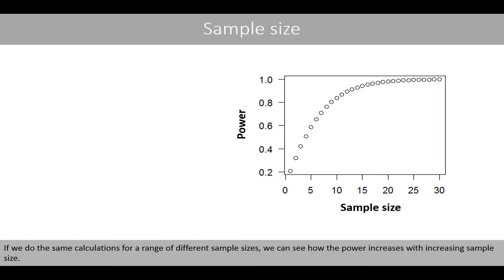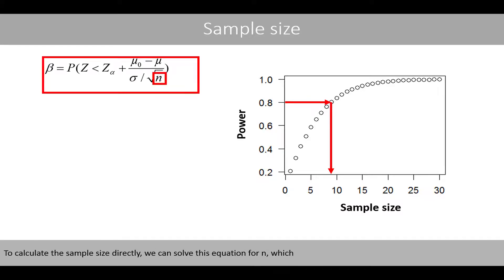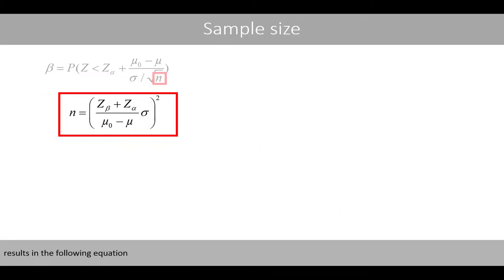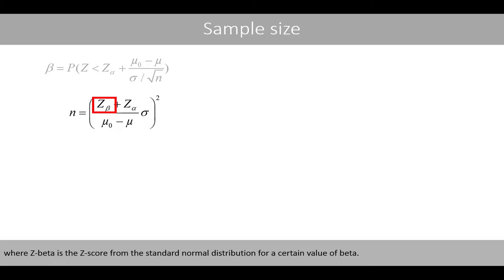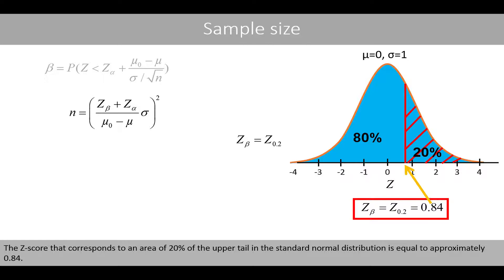If we do the same calculations for a range of different sample sizes, we see how the power increases with increasing sample size. If we like to have a power of, for example, 80%, we need a sample size of about 9. To calculate the sample size directly, we can solve this equation for n, which results in the following equation, where z-beta is the z-score from the standard normal distribution for a certain value of beta. For example, if we like a power of 80%, we set beta to 0.2, because we want that the probability of committing a type 2 error should be 20%. The z-score that corresponds to an area of 20% of the upper tail in the standard normal distribution is equal to approximately 0.84.